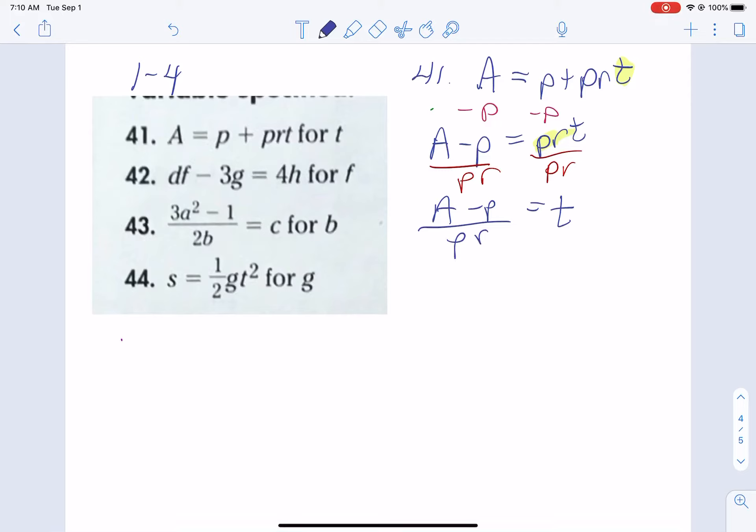Now, be careful. Don't try to cancel out those P's. There would have to be a P sitting here, here, and here for that to cancel. Since the A doesn't have that, you are done. That is as far as you could go. So there's 41.